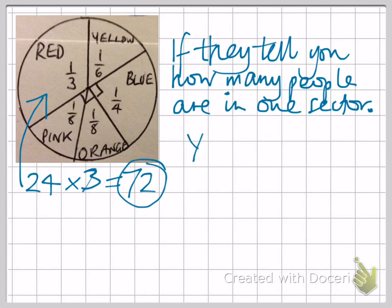So, for example, if we wanted yellow, we would do one sixth of 72. 72 divided by 6 is 12.